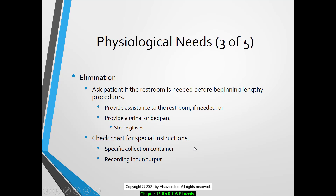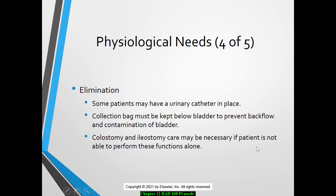Check your chart for any special instructions, such as a specific collection container. If you need to record input-output, report that back to the nurse. Some patients may have urinary catheters in place — when you come into the room, know where that catheter is on the stretcher or wheelchair. Be aware during patient transfer so it doesn't get caught in the wheels or pull out. The collection bag needs to be kept below the bladder to prevent backflow and contamination, so you don't cause a bladder infection.